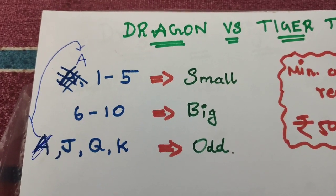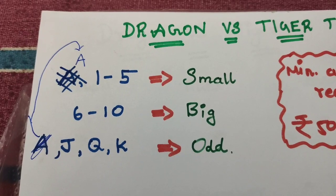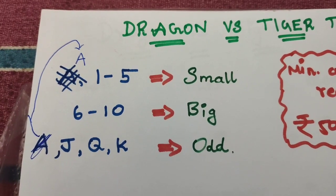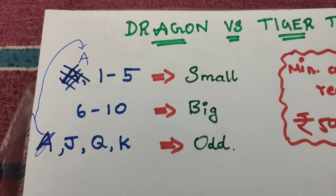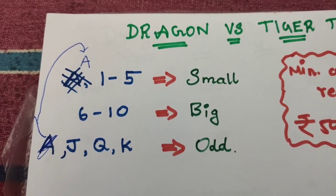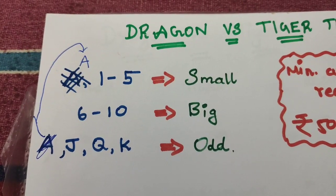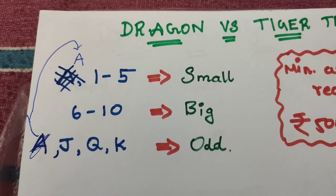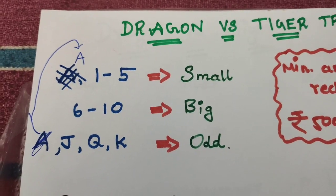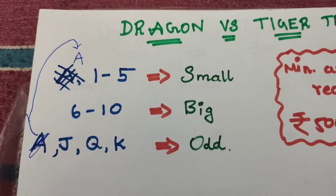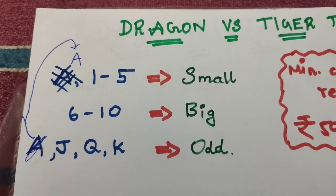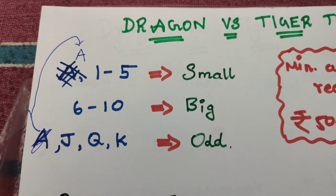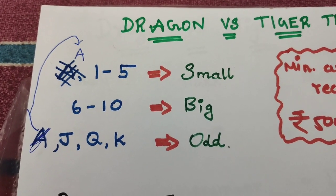So let's say 1 to 5 is small, and 6 to 10 is big. J, Q, K count as 6. So 1 to 5 is small, and 7 to 10 is big. 4 to 10 is also big.